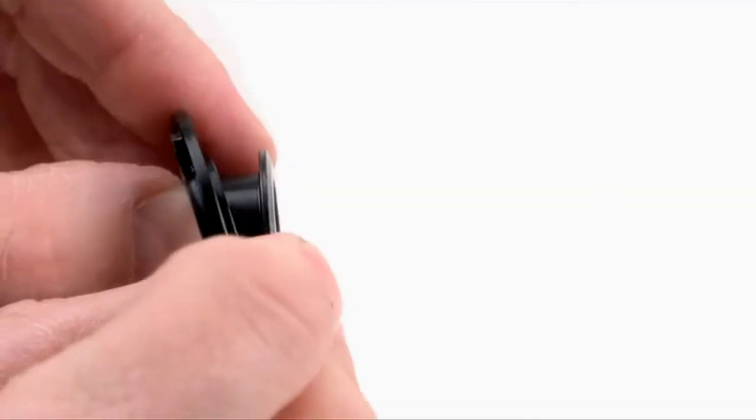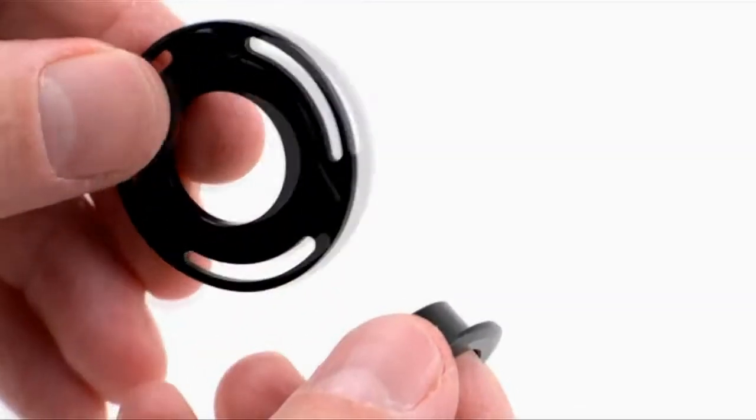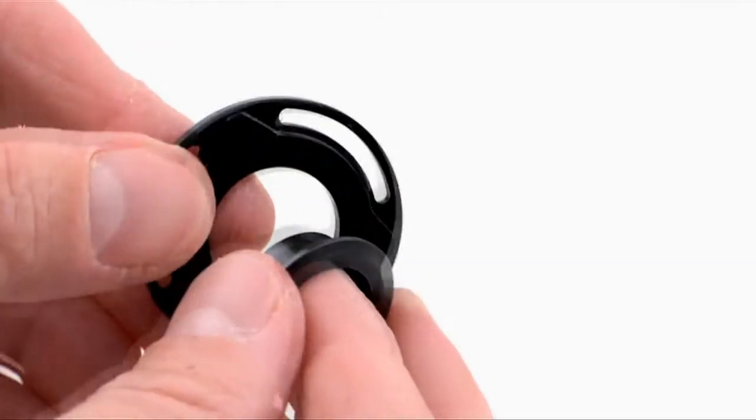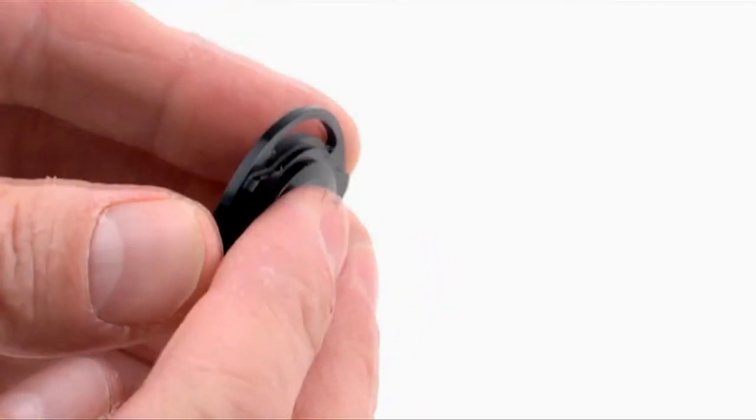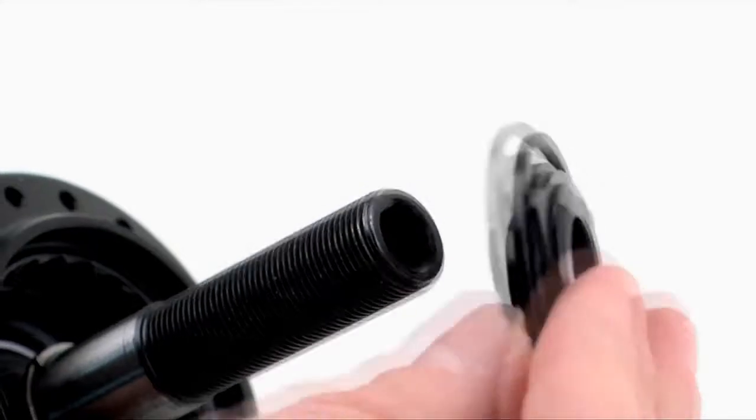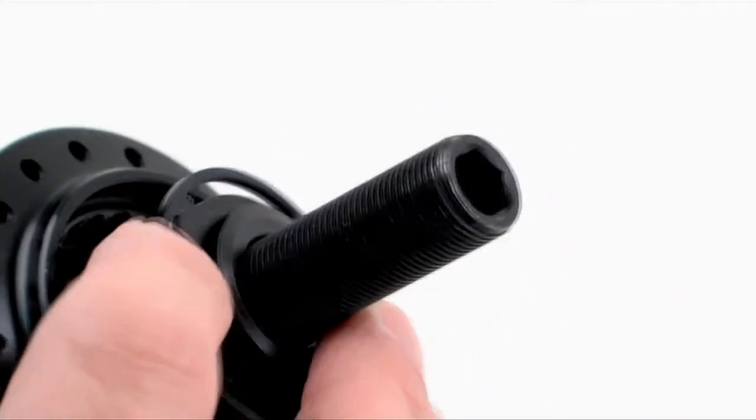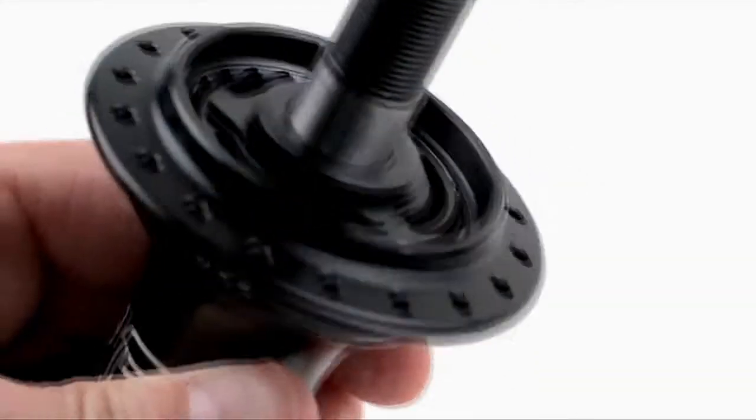Pop out the clutch disc spacer. Flip clutch disc to the Freecoaster mode with the ramps facing toward the driver, and insert the disc spacer back into the clutch disc with the flange end facing the driver. Insert back into the hub making sure the spring and all components are in the correct position.